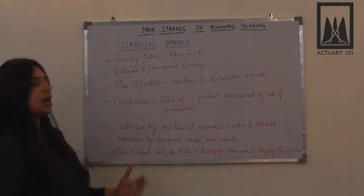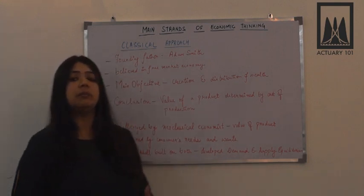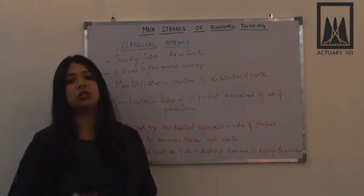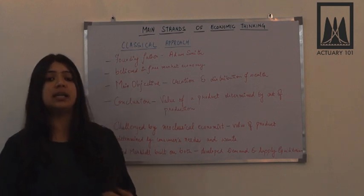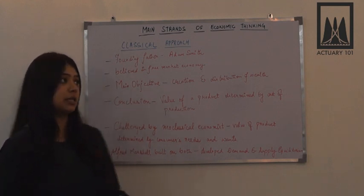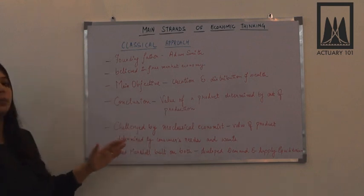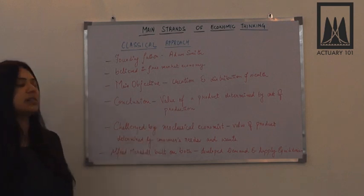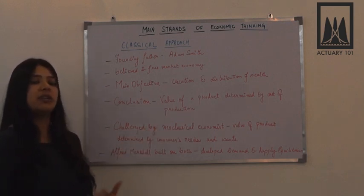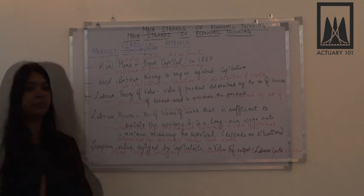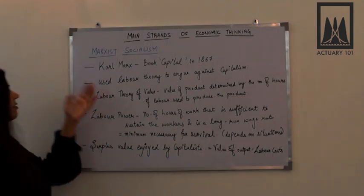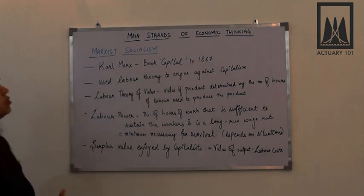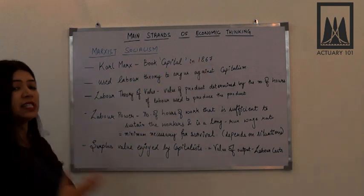Now we are going to look at the Marxist approach. Marxist socialism had a lot to say about labor power, the labor market, and how prices should be determined in the labor market. This was developed by Karl Marx in his book Capital in 1867. He used the labor theory to argue against capitalism.